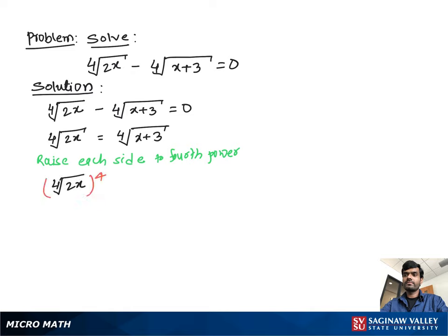So we can write: fourth root of 2x, all to the fourth power, equals fourth root of x plus 3, all to the fourth power. Now the radical sign and fourth root are removed, so we can write 2x equal to x plus 3.